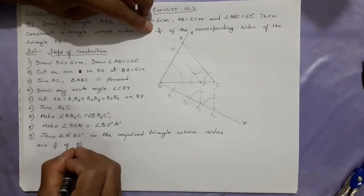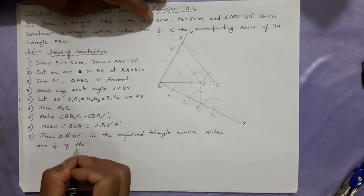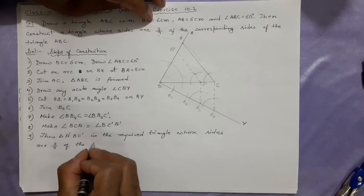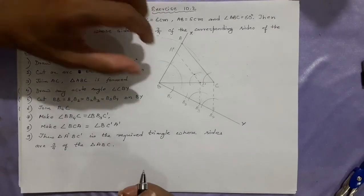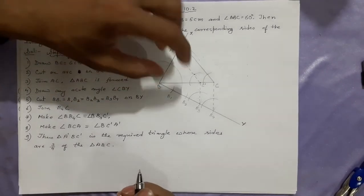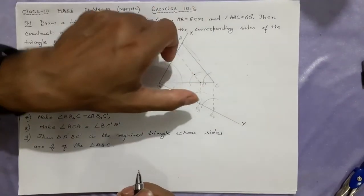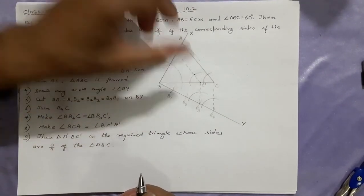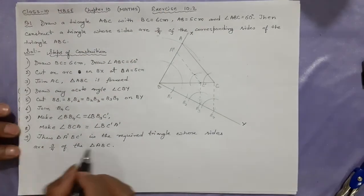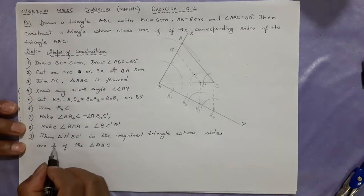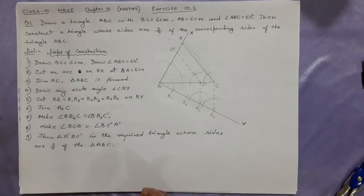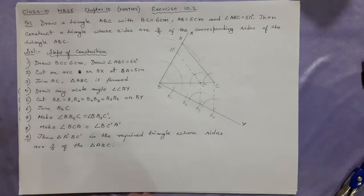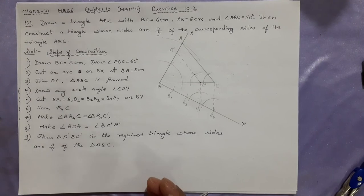This triangle is three-fourths of triangle ABC — meaning all three sides are reduced to three-fourths. It is just like zooming out. Thank you.